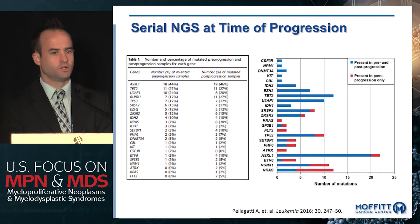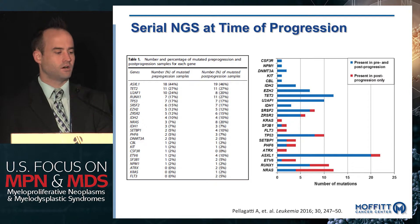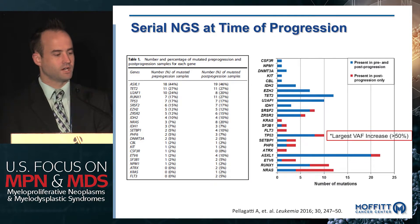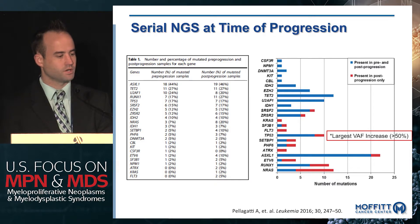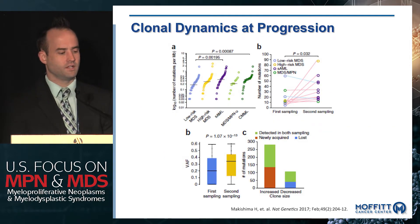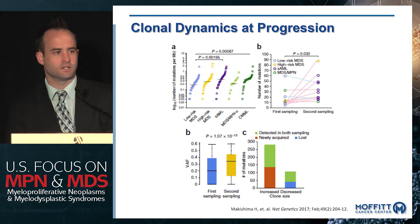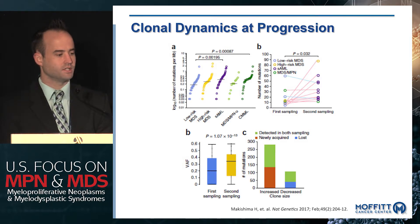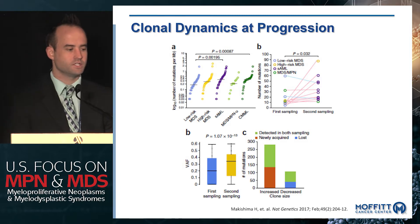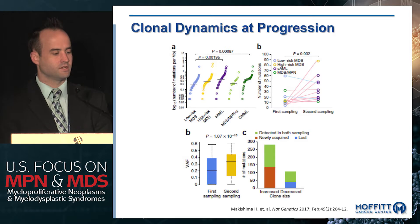Work by Andres Pellagatti looked at the time of progression from lower-risk MDS to higher-risk MDS or AML. New mutations are often acquired — highlighted in red — but there are also significant VAF changes at the time of progression, with p53 increasing more than any other gene at progression. Whole exome sequencing and targeted next-generation sequencing data clearly show the number of mutations increases as patients progress, as does the VAF of dominant clones.